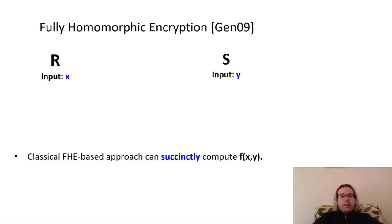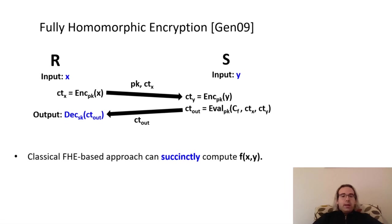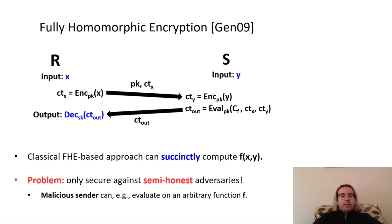To see how we can construct succinct secure computation using FHE, let's begin by having the receiver generate a key pair, encrypt their input X, and send the public key and ciphertext to the sender. The sender encrypts their input Y and homomorphically evaluates the function F on the respective input ciphertexts to obtain the ciphertext for the output. Finally, they send the resulting ciphertext to the receiver, who can simply use the secret key to decrypt it and obtain the result. This protocol clearly satisfies our notion of succinctness, since only the sender performs the homomorphic evaluation. But it's also fairly plain to see that this only satisfies security when the adversary is acting semi-honestly, as a malicious adversary can evaluate using the circuit of their choice rather than using the circuit that correctly evaluates the functionality F.